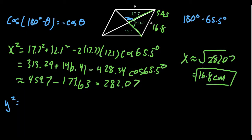So to find Y squared, we just have to take the 17.7 squared plus the 12.1 squared. Then we're going to get plus 2 times 17.7 times 12.1 times cosine of 65.5 degrees.